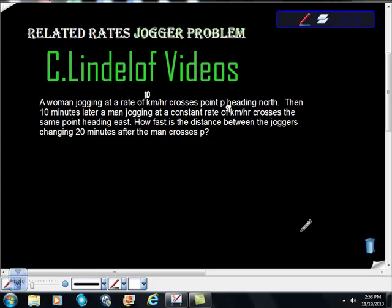It says a woman jogging at a rate of 10 kilometers per hour crosses point P heading north. This is a constant rate. Then 10 minutes later, a man jogging at a constant rate of 9 kilometers per hour crosses the same point heading east.